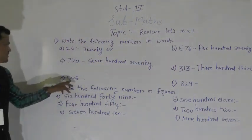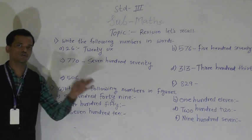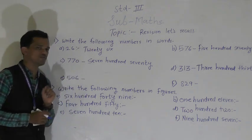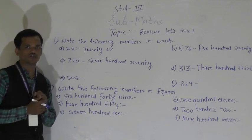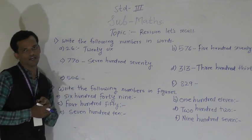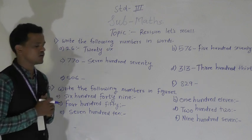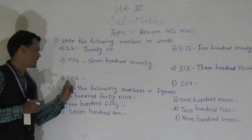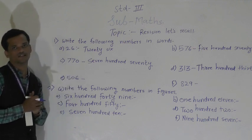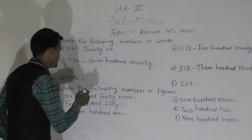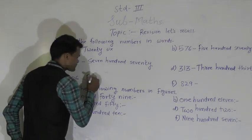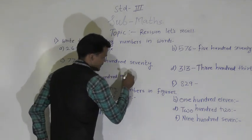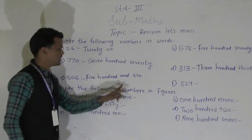Next number: 506. First see the places of the digit. 6 comes at the ones place so 6 ones means 6. 0 comes at the tens place means 0. Then 5 comes at the hundreds place. So this number is 506. Write the spelling: 506.